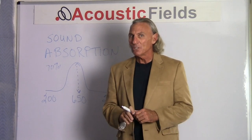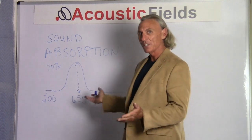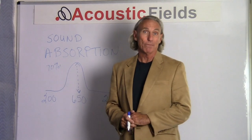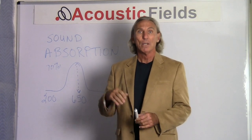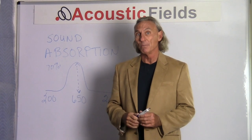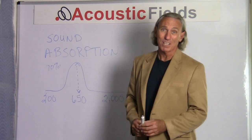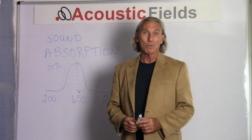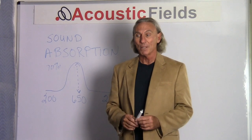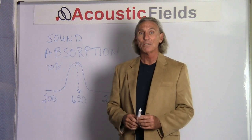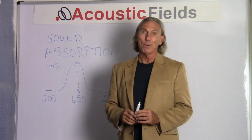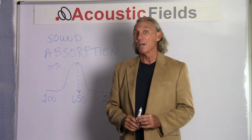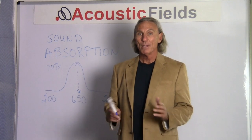I can't think of any acoustic usage for this kind of curve. Who would want to have a huge amount of absorption at 650 cycles — kind of the end of the vocal spectrum range — with nothing on the low side and basically nothing after that? This kind of bell-shaped curve is something that we try to avoid in acoustics. So from an absorption standpoint, the curves it represents are something we try to stay away from.